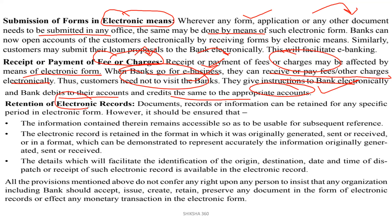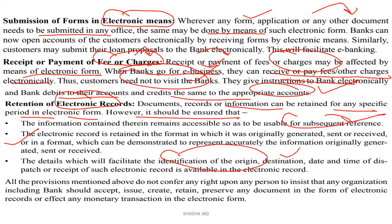Retention of electronic records. Documents, records or information can be retained for any specific period in electronic form. However, it should be ensured that the information contained therein remains accessible so as to be usable for subsequent reference. The electronic record is retained in the format in which it was originally generated, sent or received, or in a format which can be demonstrated to represent accurately the information originally generated, sent or received.